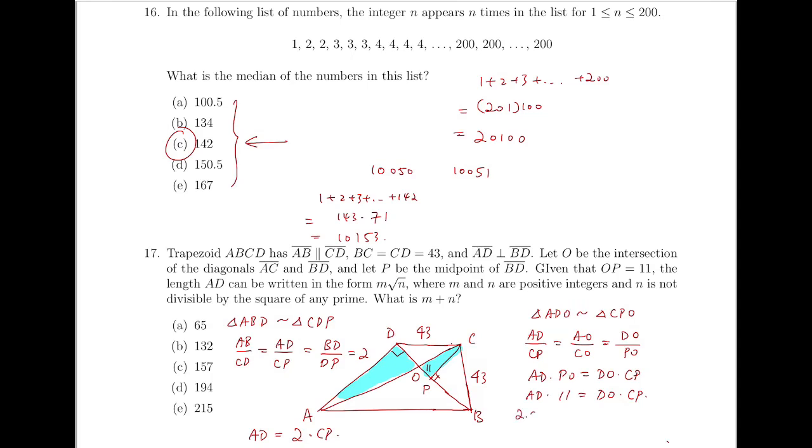Because P is the midpoint, so this ratio is 2. So then AD is equal to 2 times CP. So therefore, 2 times CP times 11 equals DO times CP, and so DO is 22.